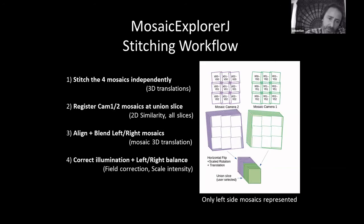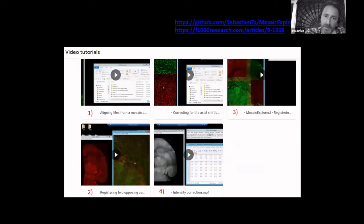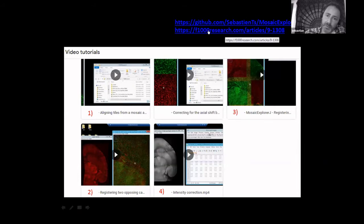That approach works well if the light sheets have the same orientation and are not tilted along the horizontal axis — otherwise a 3D rotation would be needed, which is a current limitation. Finally, you can correct illumination by scaling the intensity of one side relative to the other and applying flat-field correction. The code is available on GitHub, simple to install as an ImageJ macro, and there is an article under open review on F1000Research. There are also five video tutorials covering the four steps in more detail.